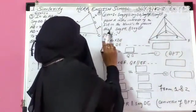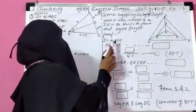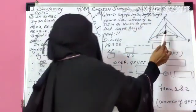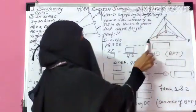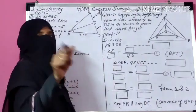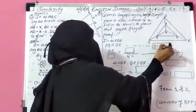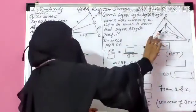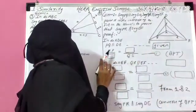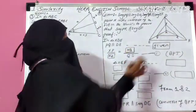Fill in the blanks to prove that segment PR is parallel to DF. The activity is already given; you just fill the boxes. First, in triangle XDE, PQ is parallel to DE. If a line is parallel to any one side of a triangle, it divides the other two sides in equal ratios — that is the BPT theorem. So by BPT theorem: XP upon PD equals XQ upon QE.